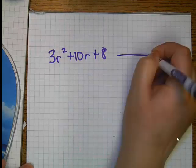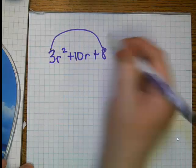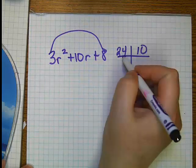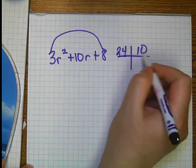Alright, to solve this one, you need to multiply first times last. 8 times 3 is 24, and your sum is 10. So you need two numbers to give you a product of 24 and a sum of 10.